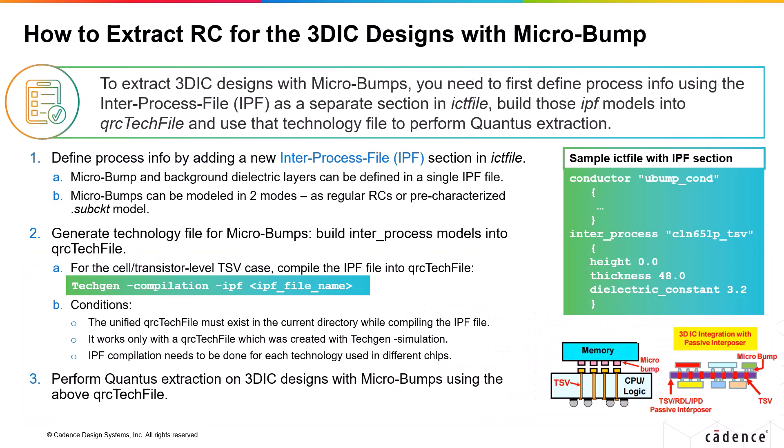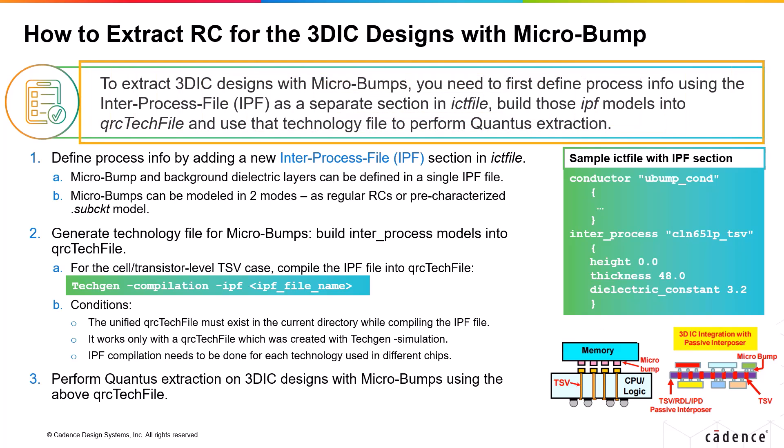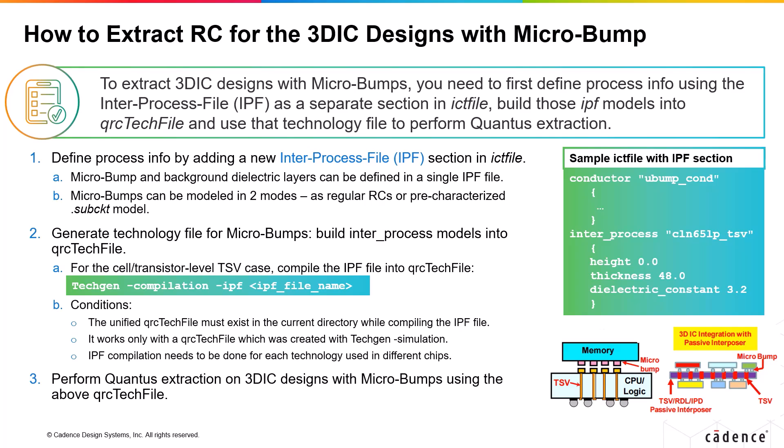Taking a closer look at the Quantus 3D IC extraction for designs with micro bumps: the summary is that we need to create an ICT file with a separate IPF section that carries the details of the micro bump, then use this ICT file as input during the tech gen to generate the QRC tech file, then use that QRC tech file to run the extraction. You need to define the process info using the inter process file as a separate section in the ICT file. Here's a sample ICT file with a separate IPF section under the heading 'inter_process'.